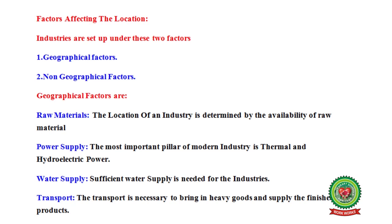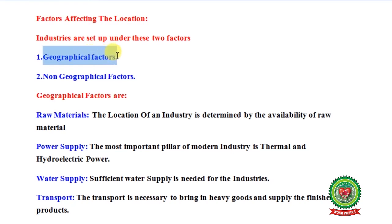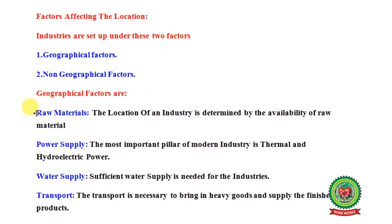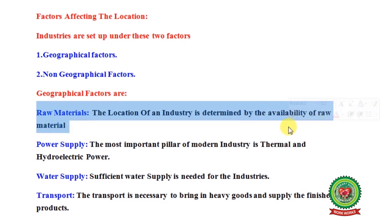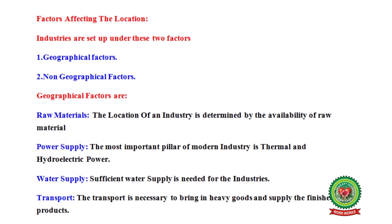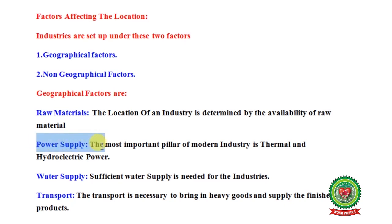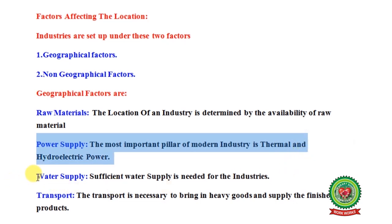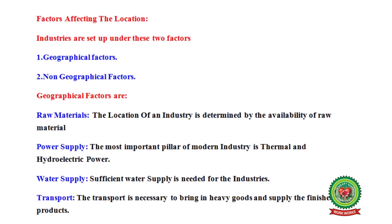We will study the main points about factors required for setting up an industry. The first geographical factor is raw material — the location of an industry is determined by the availability of raw material. For example, to set up a sugar industry, the raw material is sugar cane, which should be available from nearby places. The second factor is power supply — the most important pillar of modern industry is thermal and hydroelectricity. Thermal power is harnessed from coal, and hydroelectricity is power generated through water.